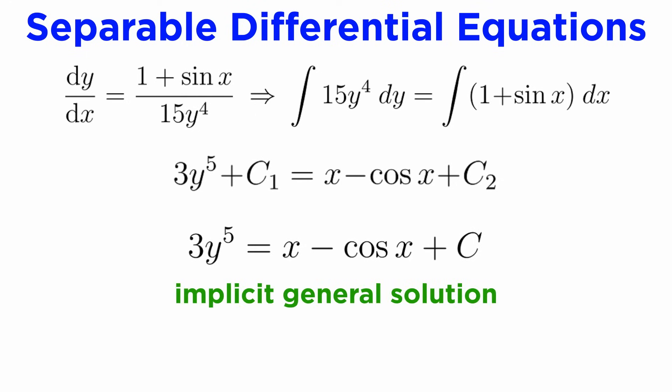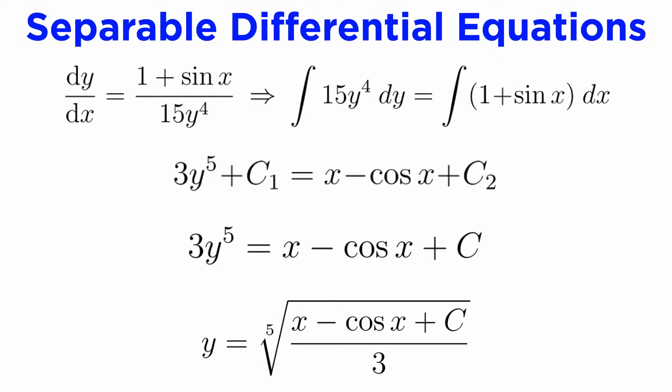We have now obtained an implicit general solution to our DE, but we can easily rearrange for y by dividing by 3 and taking the fifth root of both sides to get the explicit general solution: y equals the fifth root of x minus cosine of x plus c, all divided by 3.